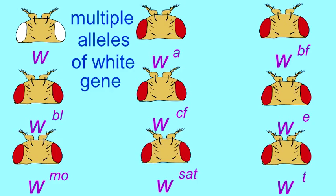However, different mutations at different points of the gene can cause, instead of a white color, an apricot color. There is an allele of the white gene known as white apricot.